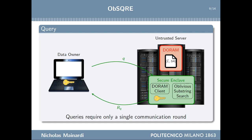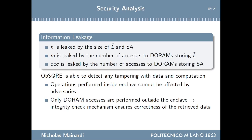To issue a query, the data owner simply sends the string to be searched through the secure communication channel to the enclave, which computes the results and sends them back in a single communication round. From the security analysis of Obscure, the information leakage comes from the sizes of the outsourced data structures and the number of accesses to the ORAM storing each data structure. Any adversarial misbehavior can be promptly detected — ensured by SGX security guarantees for operations inside the enclave, while operations outside the enclave are protected by the integrity check mechanism.